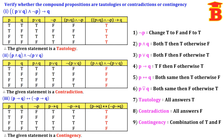So to summarize: if all the final answers are true then it is a tautology; if all the final answers are false then it is a contradiction; if the final answers have both true and false then it is a contingency.